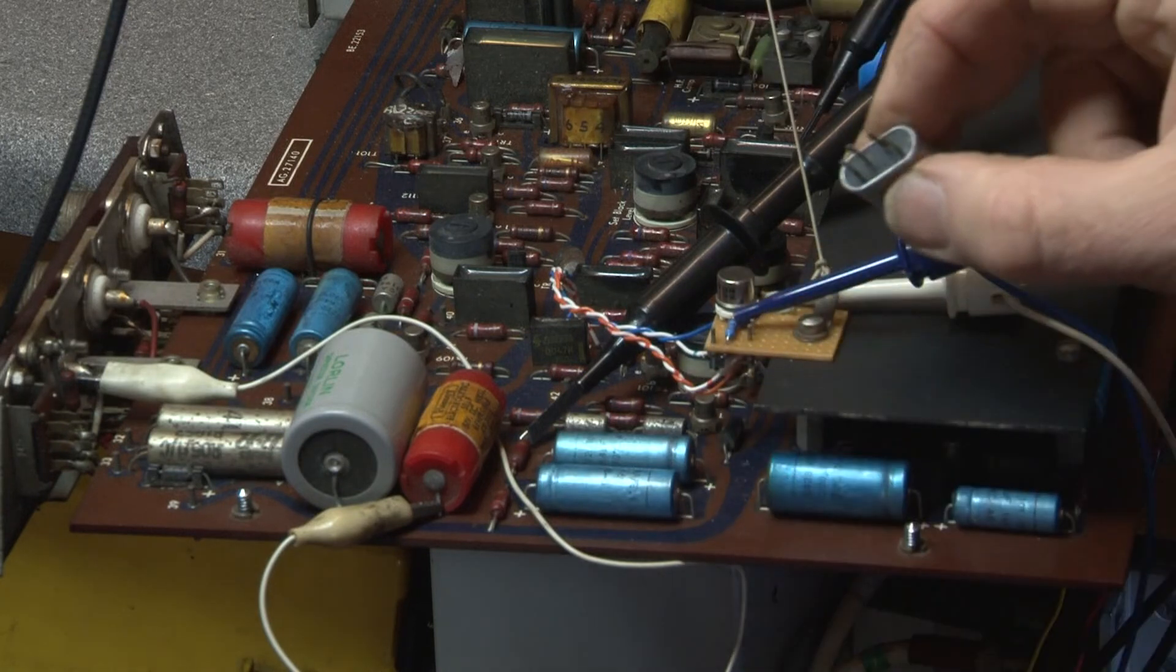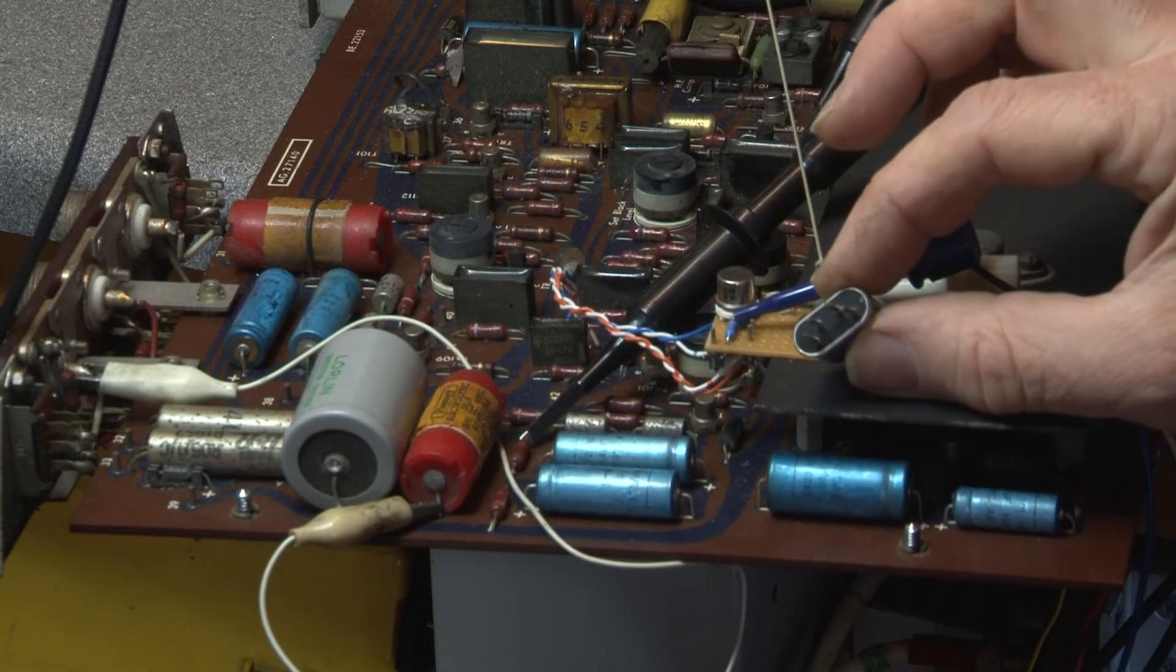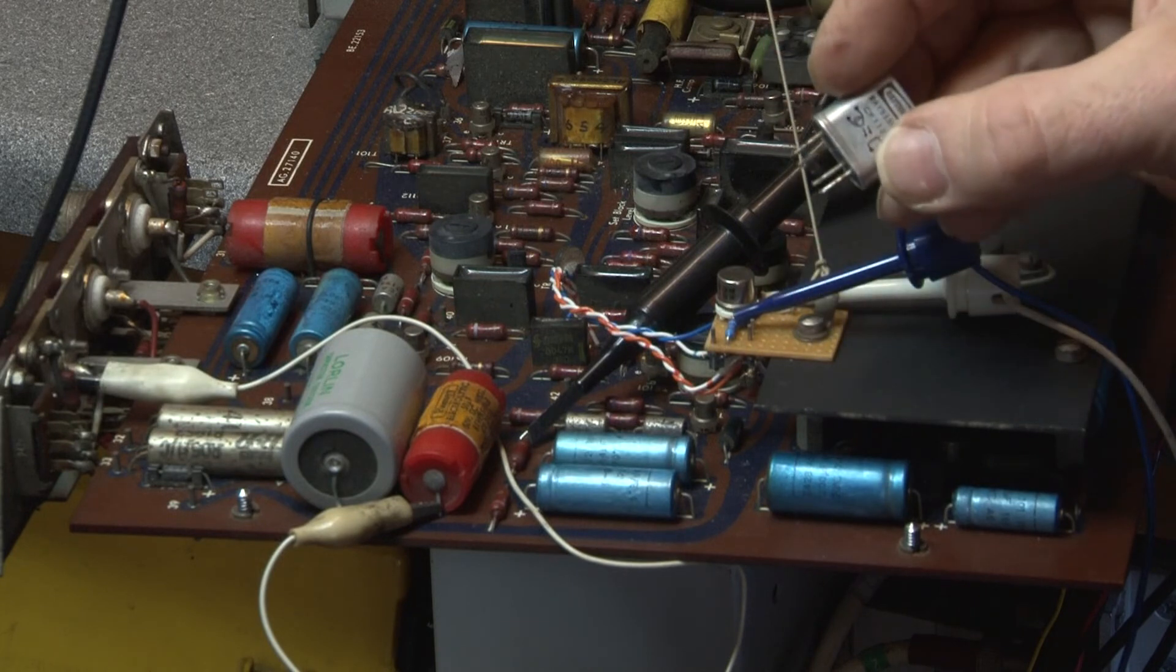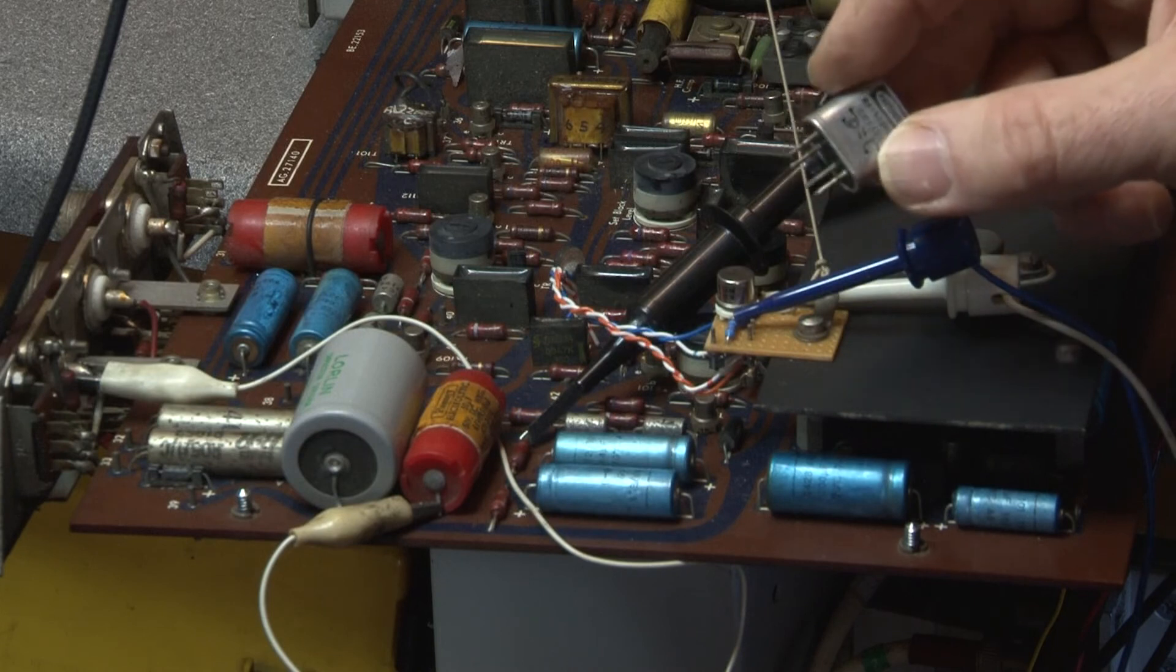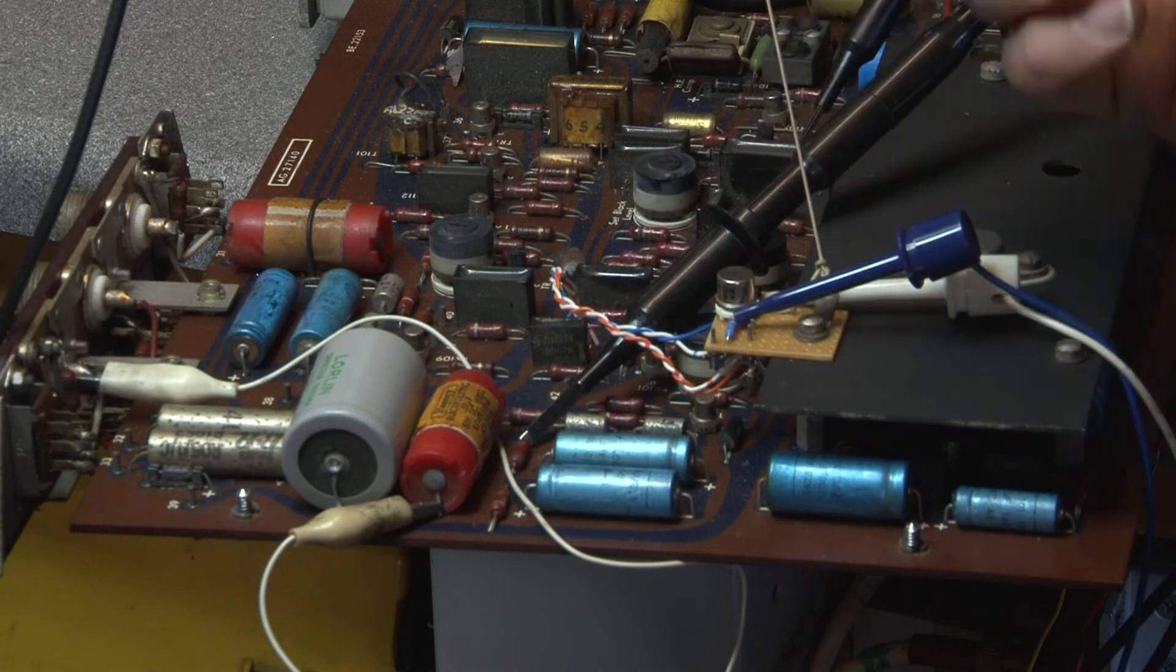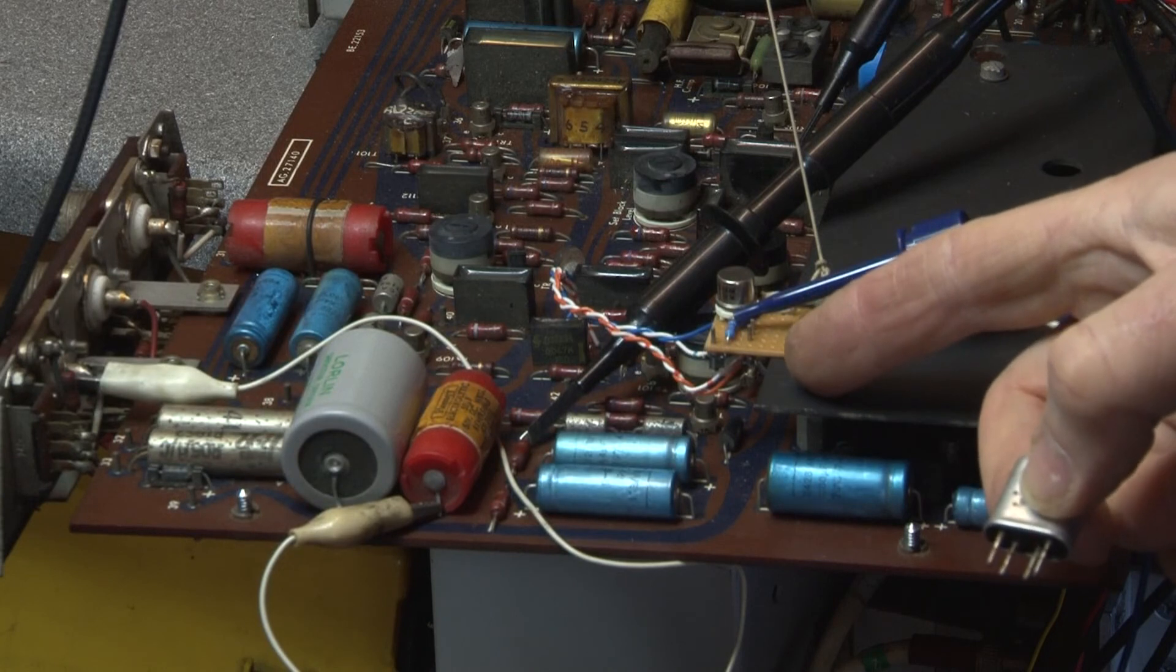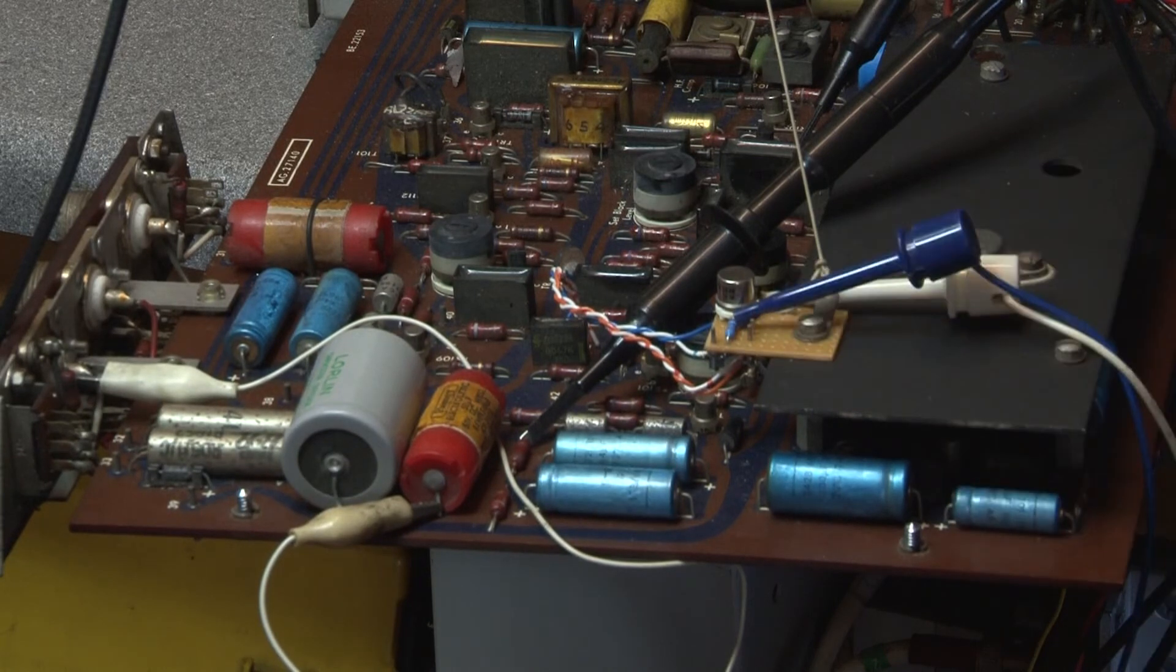Another possibility might be to try and delicately open up the package here and replace the filament lamp either with something similar or an LED or something like that. But that would need a bit more thought. So in the meantime the easiest thing to do was to make a little bodge board.